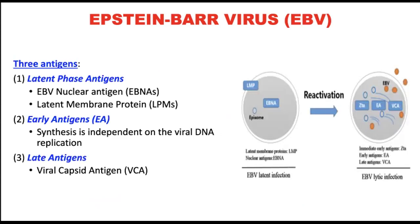EBV has three antigens. Latent phase antigens include the Epstein-Barr virus nuclear antigens, or EBNAs, and the latent membrane proteins, or LMPs. When LMPs are present, that indicates the Epstein-Barr virus genome is present. Early antigens, or EA, are synthesized independently of viral DNA replication and trigger the onset of productive viral replication — so if we detect them, it means EBV is currently replicating. Late antigens refer to the viral capsid antigen, or VCA, produced abundantly in cells undergoing productive viral infection.